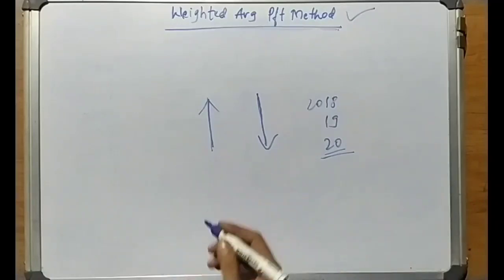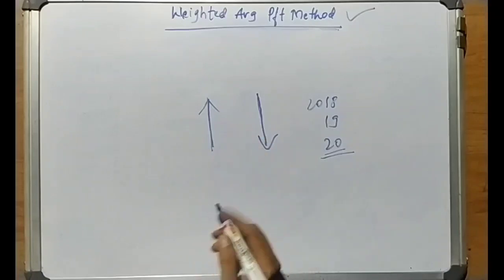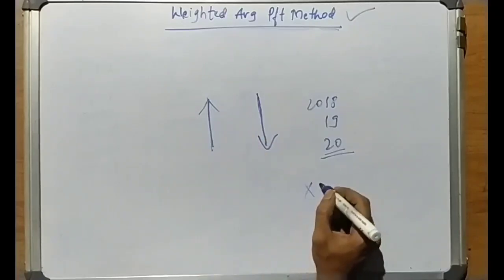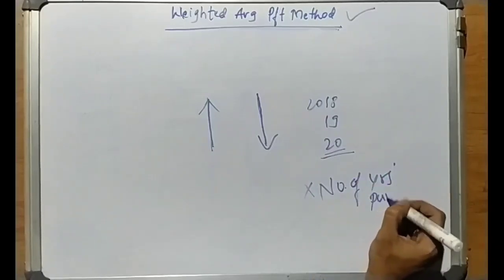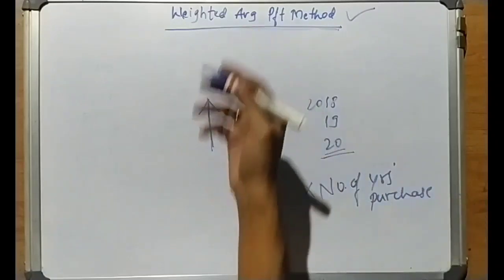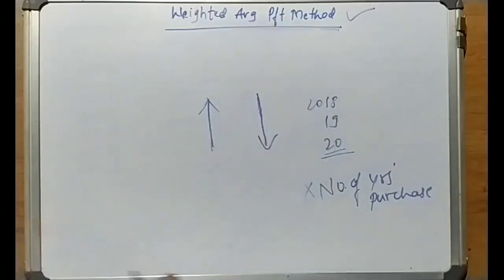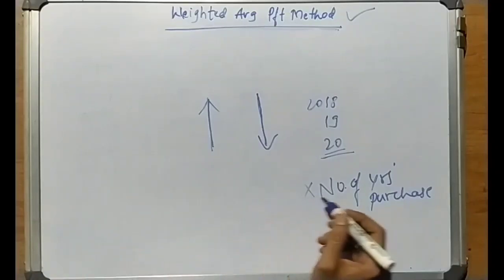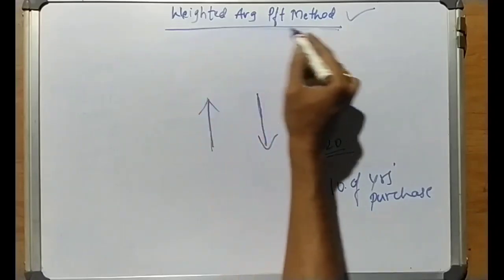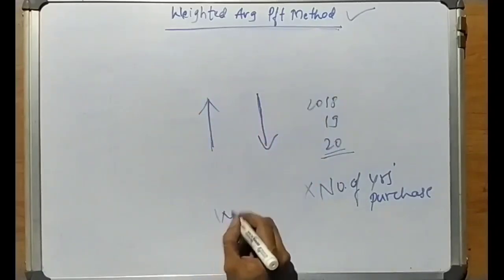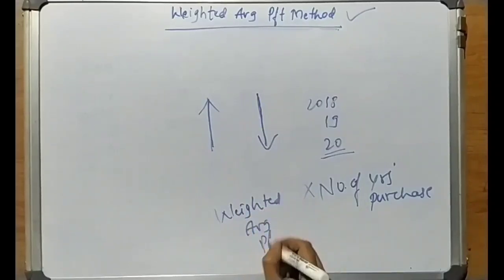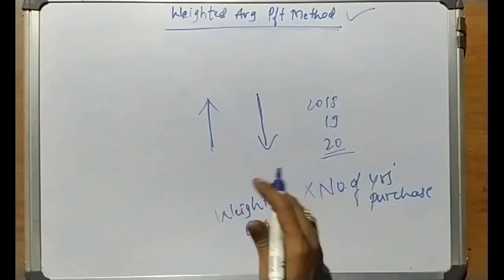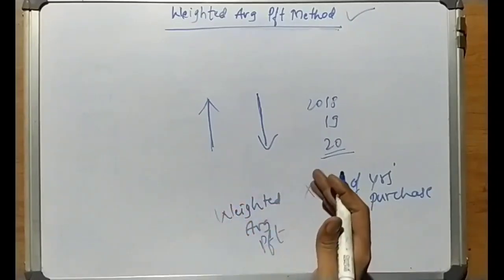The goodwill calculation formula is the same. Goodwill is equal to weighted average profit multiplied by the number of years of purchase. The previous method was the Simple Average Profit Method, where we used average profit into number of years purchase. In this method, the Weighted Average Profit Method, we use weighted average profit instead. This method is very simple to understand and easy to apply.